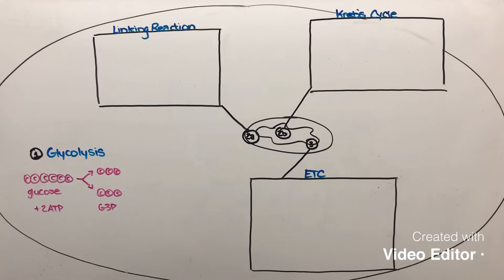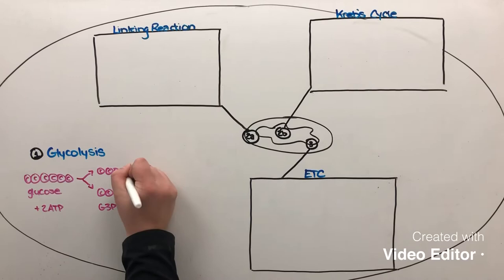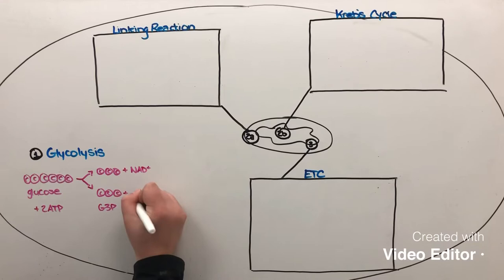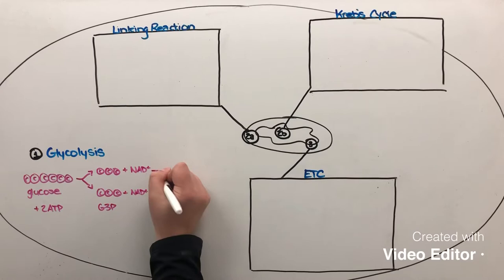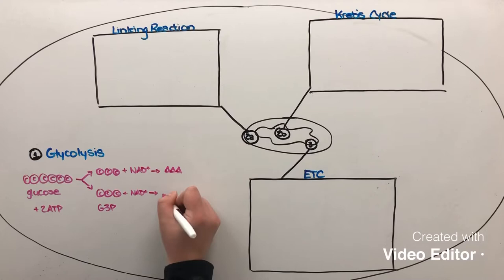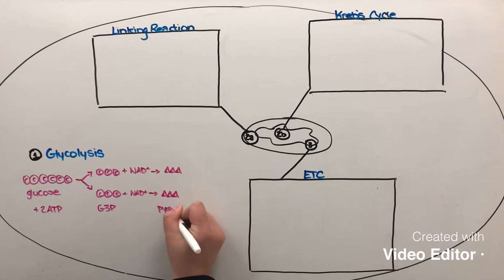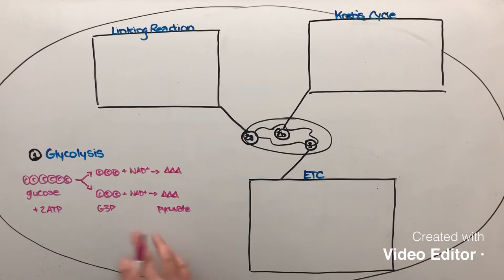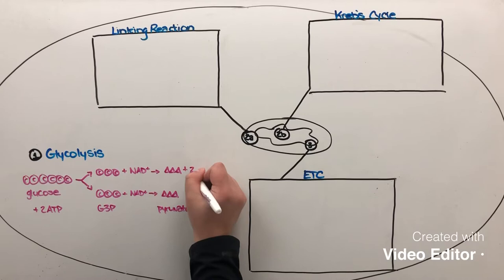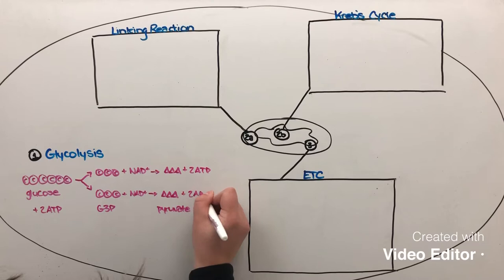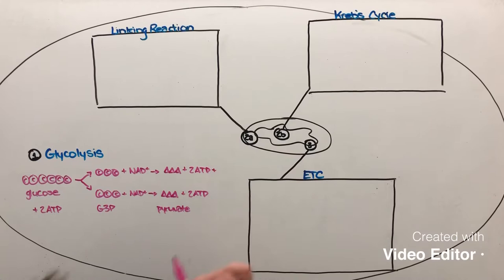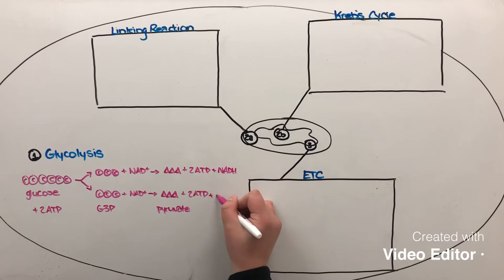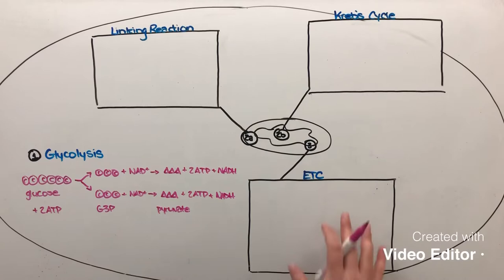We want to transform those G3P molecules into pyruvate. In order to do so, each of them needs to react with a molecule called NAD+, and that is what produces our pyruvate. We're going to use a series of triangles to represent pyruvate. Some of the byproducts of this reaction between G3P and NAD+ include ATP — each of those reactions actually generates two more ATP molecules. We also get another molecule called NADH. NADH will be used eventually to help power the electron transport chain.